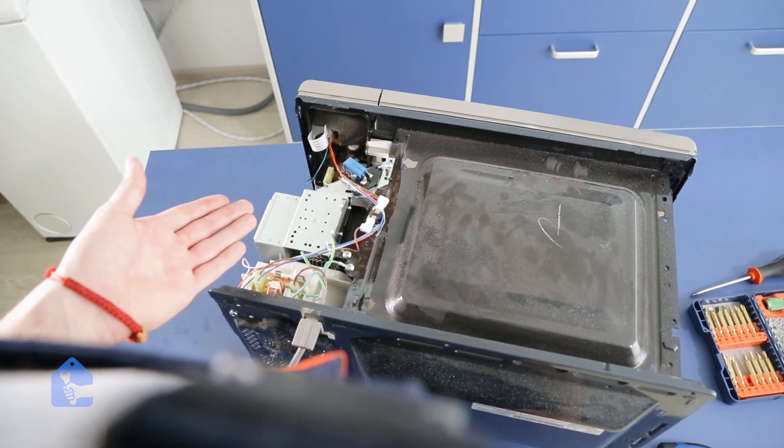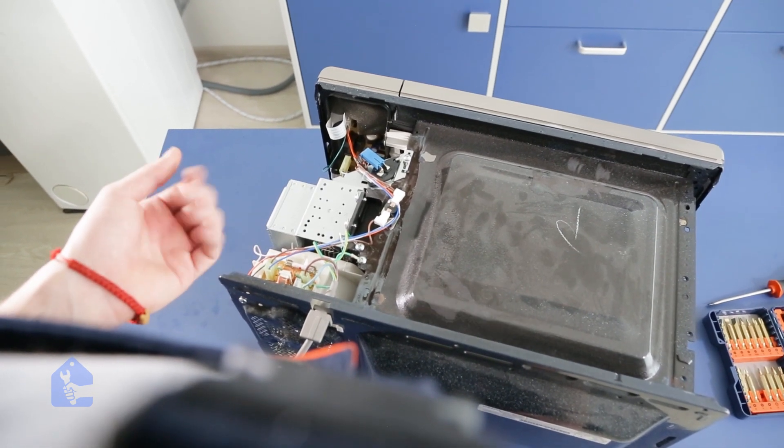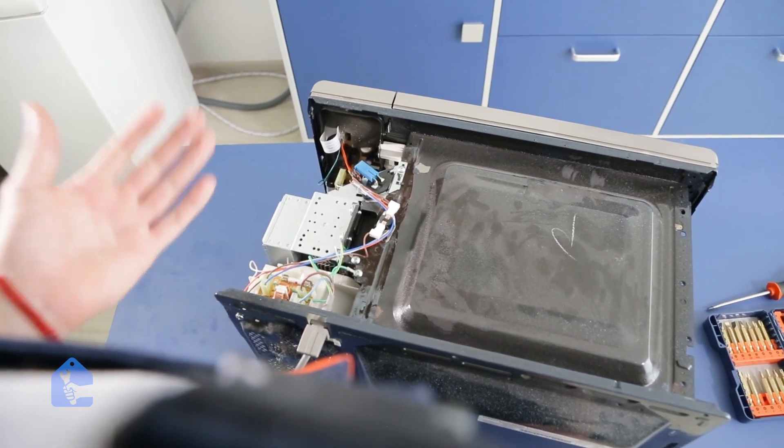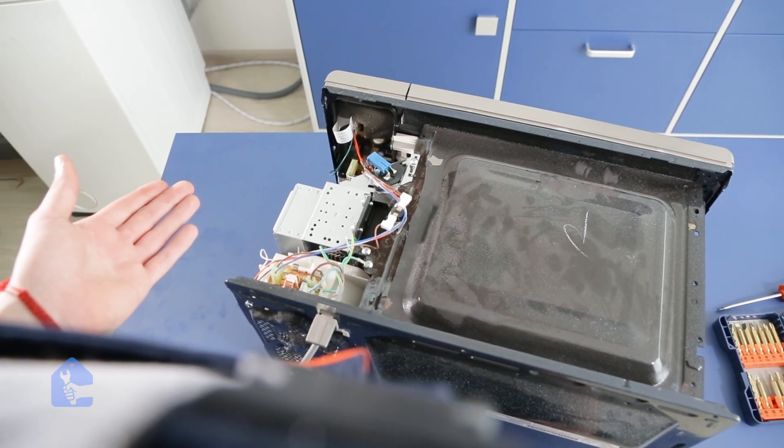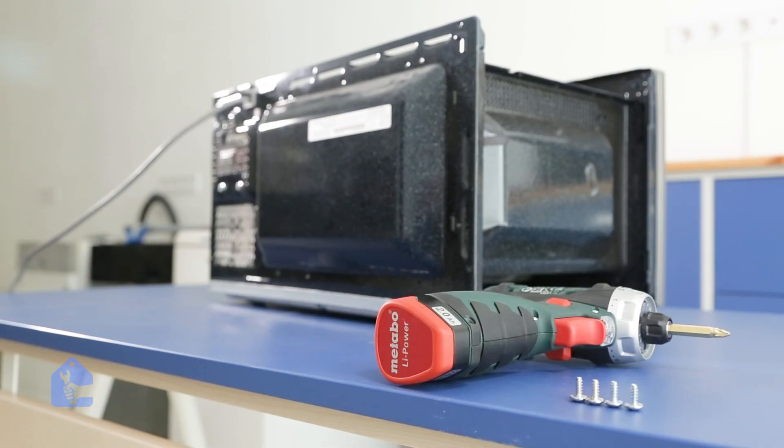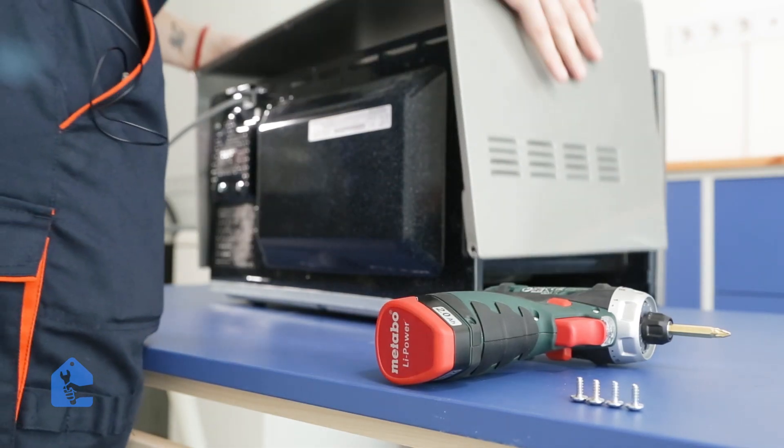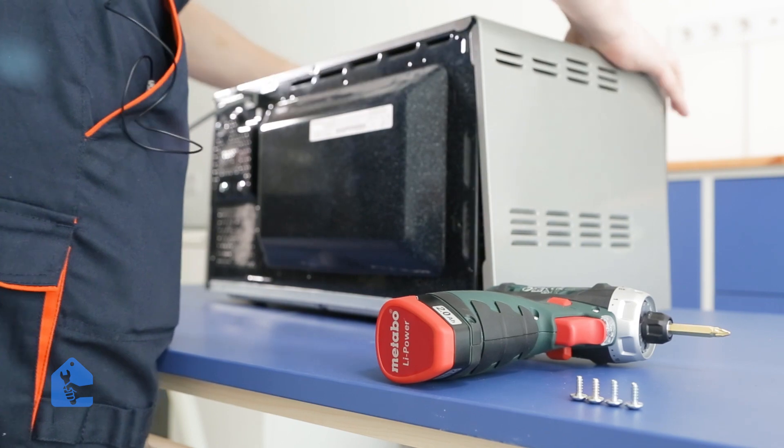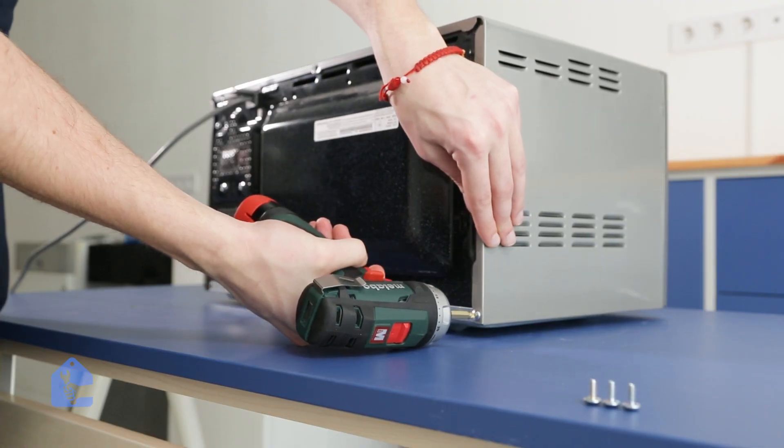That's usually the case in microwaves not heating, that the magnetron is faulty. But sometimes it could be the other fuse. Usually there is a fuse on top of a magnetron that you need to test as well. Now let's go ahead and put the top cover back on and secure it back with screws.